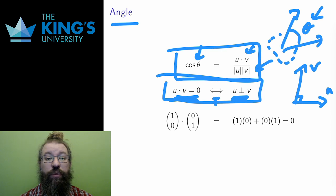For now, just as an example, you can see that the vectors (1, 0) and (0, 1), which point in the x and y-axes directions, do indeed have 0 dot product and are perpendicular.